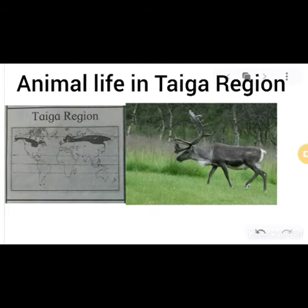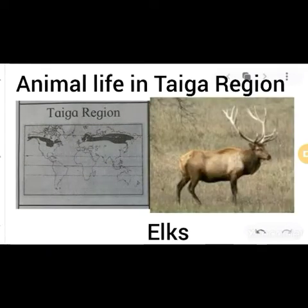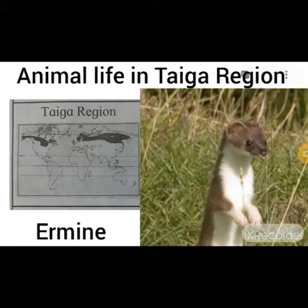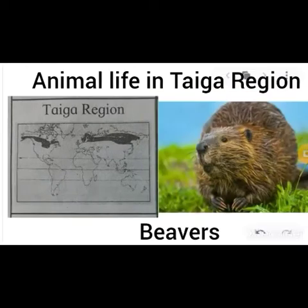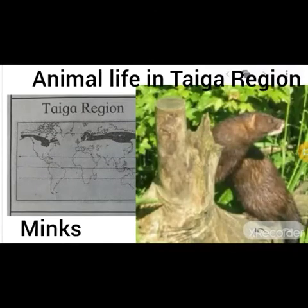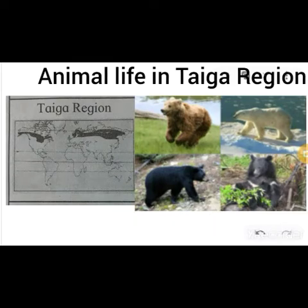Animal life in the taiga region includes caribou (known as reindeer), elk, moose, beaver, silver fox, and various birds. Such types of animals are found in the taiga region.